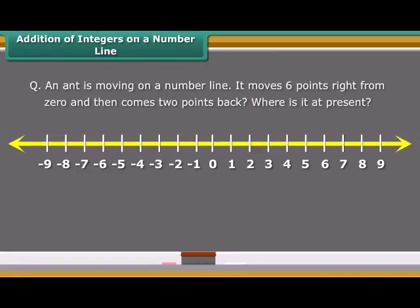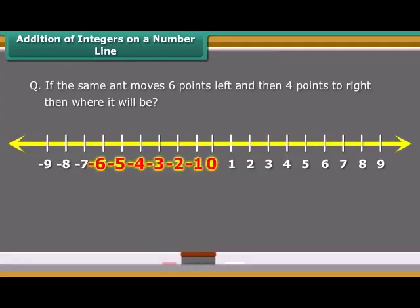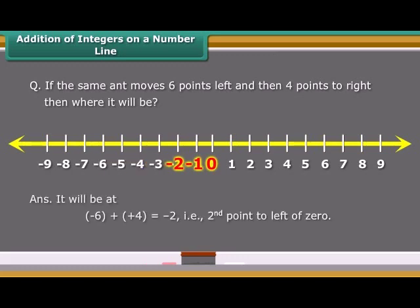An ant is moving on a number line. It moves six points to the right from 0, then comes two points back. It will be at 6 plus minus 2, which equals 4, the fourth point to the right of 0. If the same ant moves six points left and then four points to the right, it will be at minus 6 plus 4, which equals minus 2 — the second point to the left of 0.